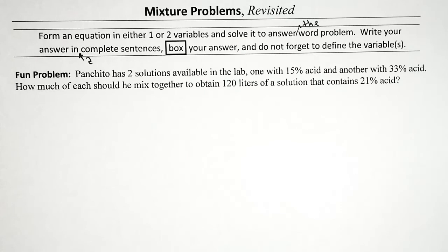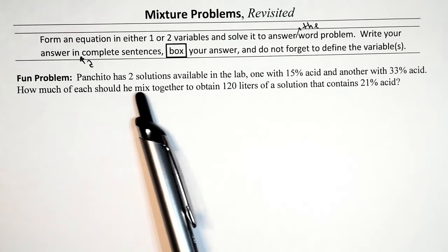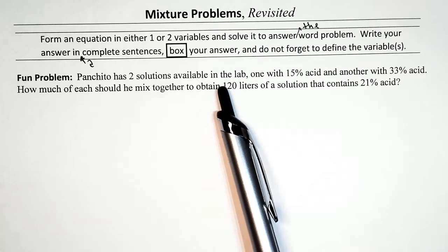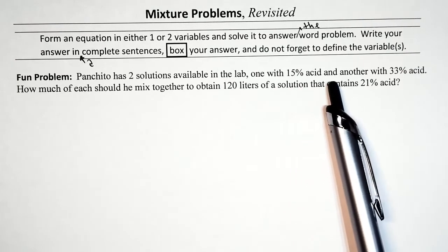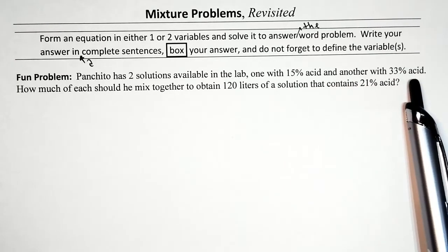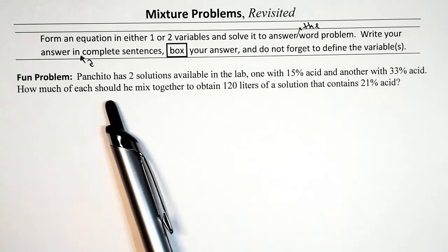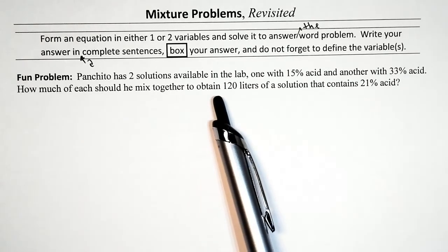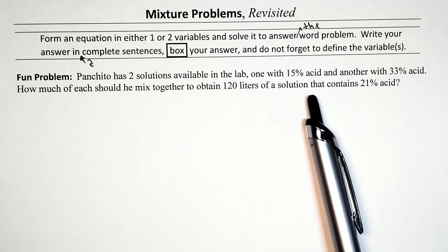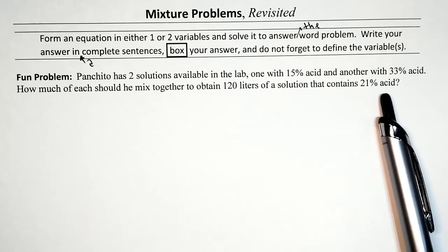For these mixture problems we said before, it's very important for you to have a clear idea of what you're mixing and what the desired outcome is. So from the top: Panchito has two solutions available in the lab, one with 15% acid and another with 33% acid. How much of each should he mix together to obtain 120 liters of a solution that contains 21% acid?